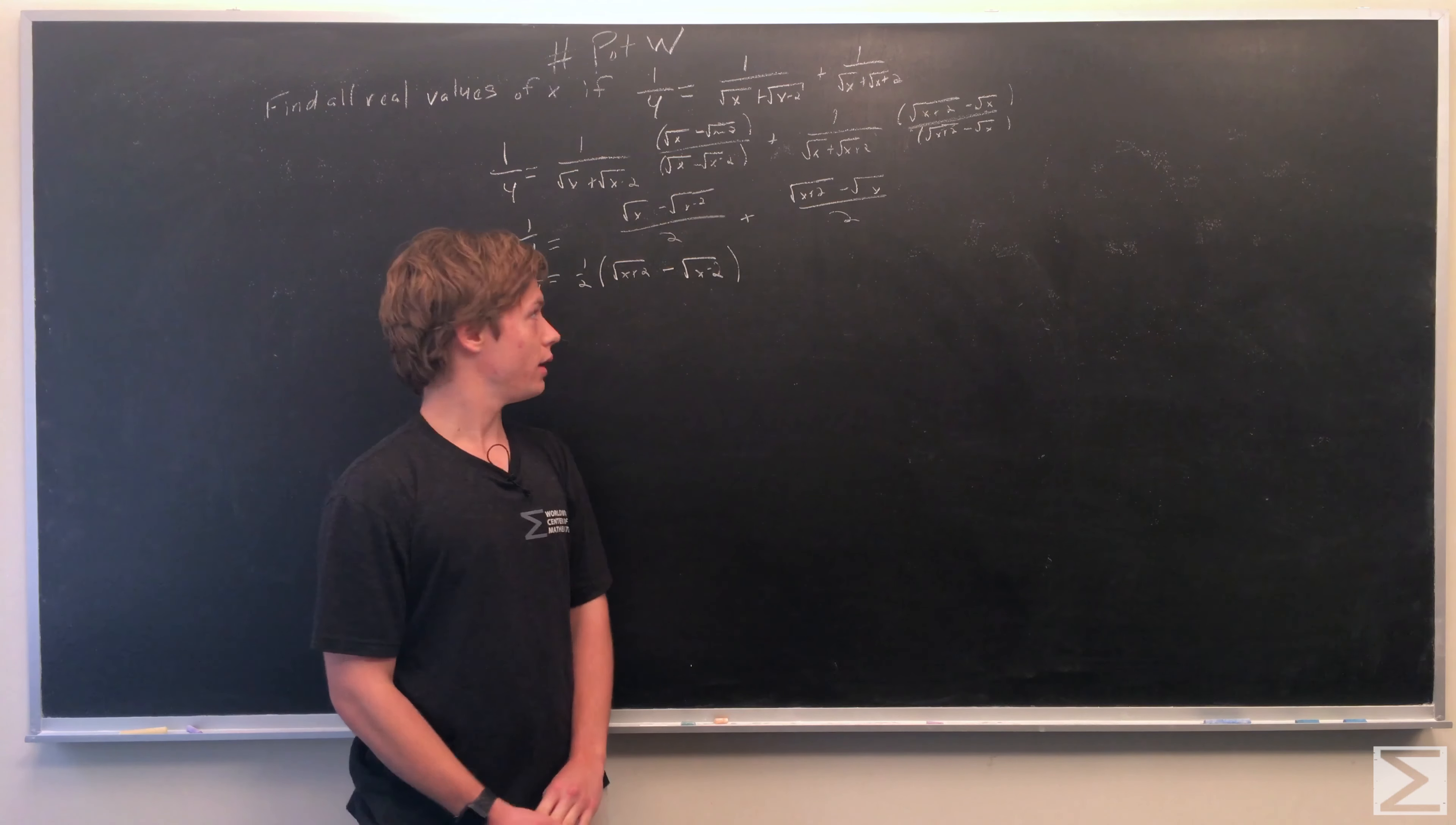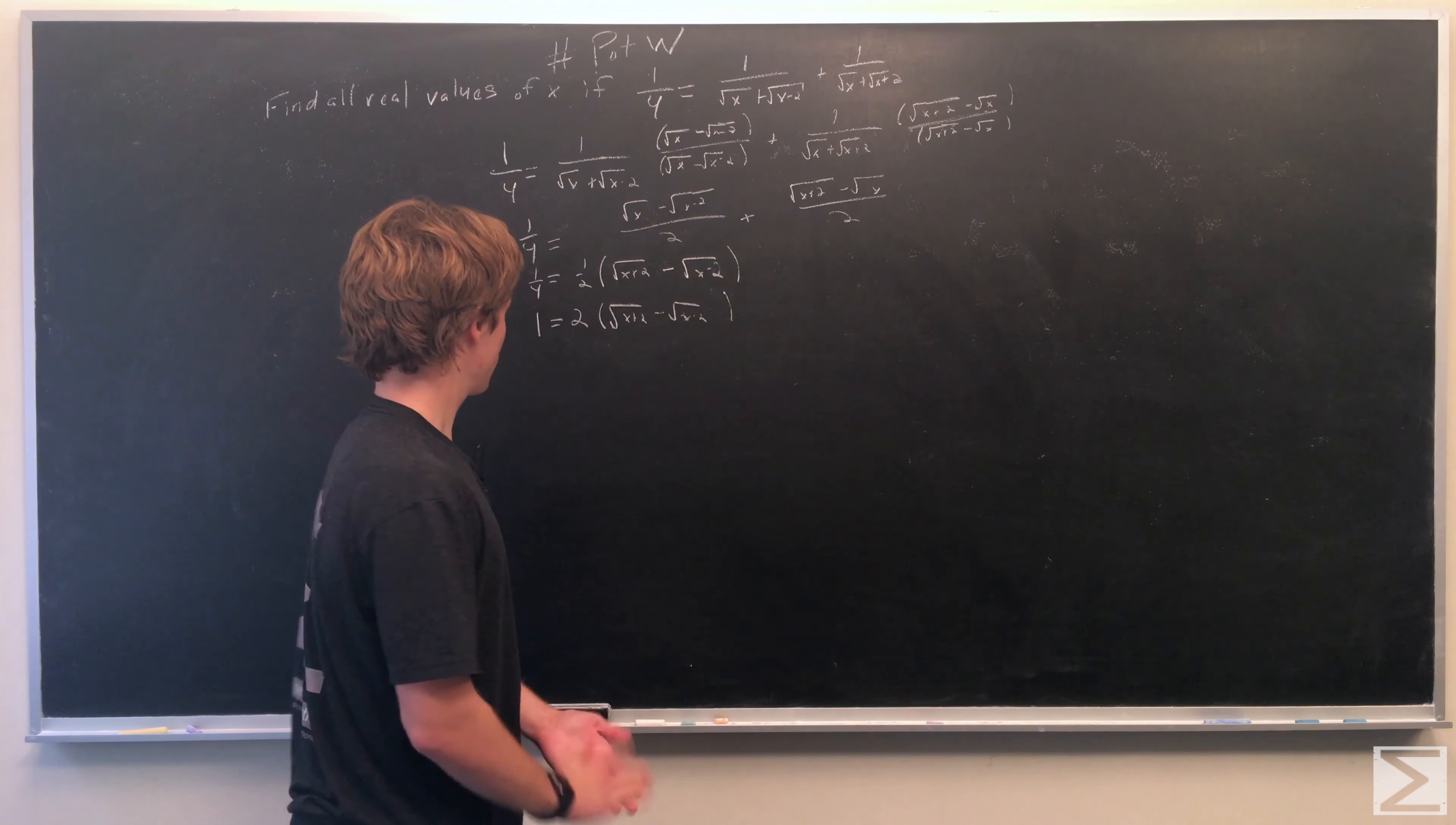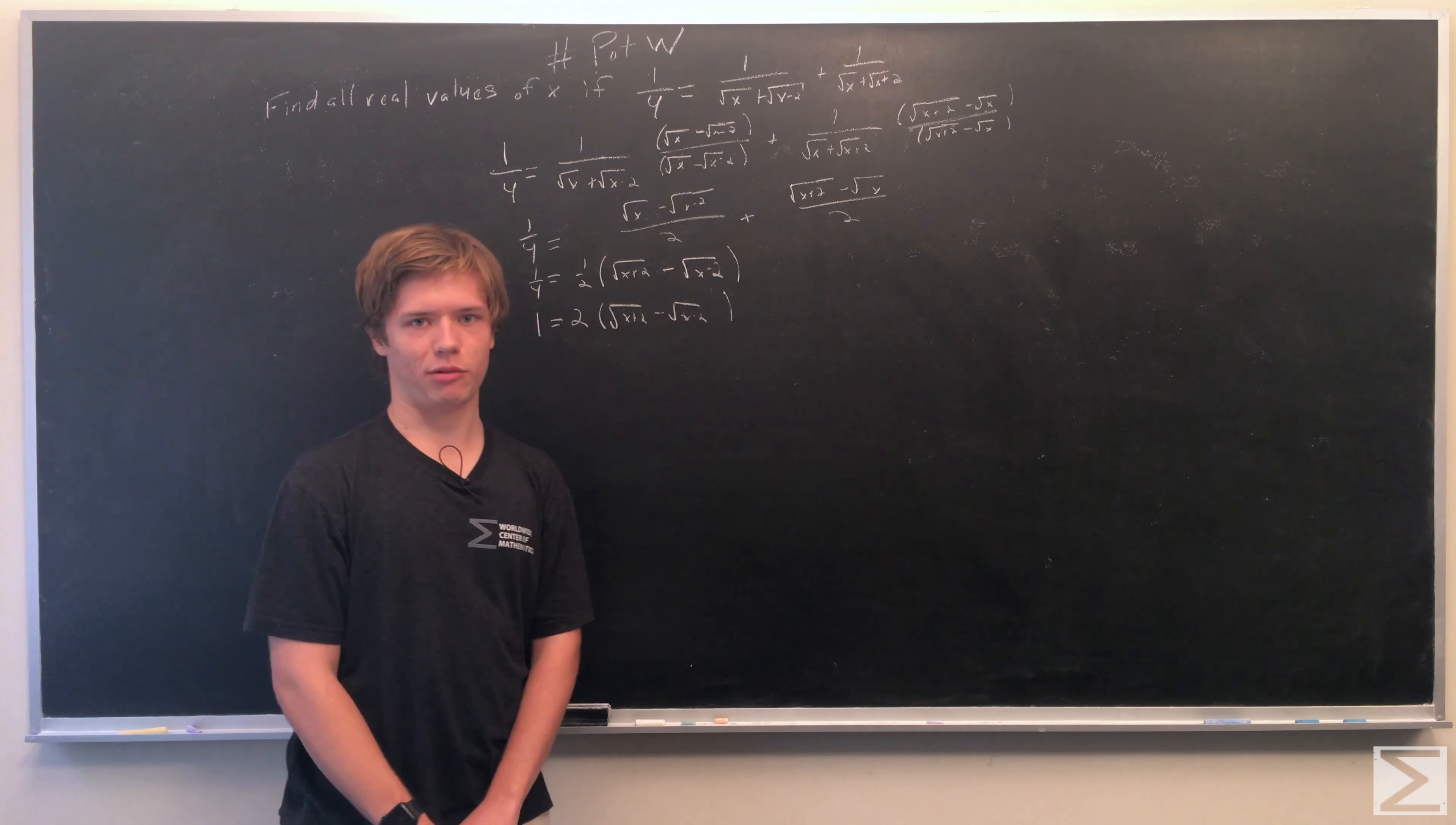Now we'll multiply both sides by 4 to clear the denominators. We get 1 equals 2 times (√(x+2) - √(x-2)). Now we'll square both sides.